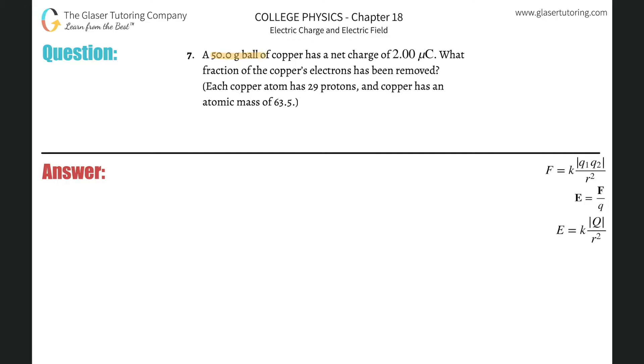Number seven. A 50 gram ball of copper has a net charge of two microcoulombs. What fraction of the copper's electrons has been removed? Alright, so first, how many electrons have been removed? Not what fraction yet, but how many?